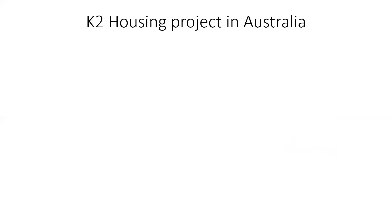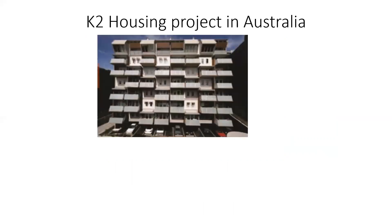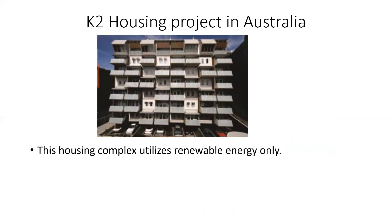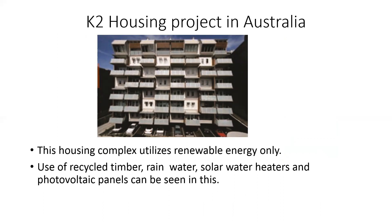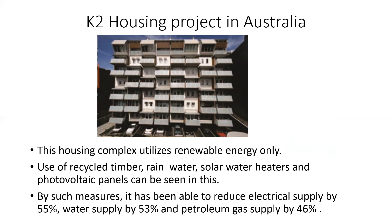Then the K2 housing project in Australia. This housing complex utilizes renewable energy. Use of recycled timber, rainwater, solar water heaters, and photovoltaic panels can be seen. By such measures, it has been able to reduce electrical supply by 55%, water supply by 53%, and petroleum gas supply by 46%.